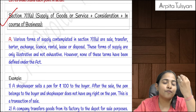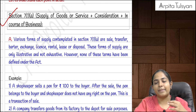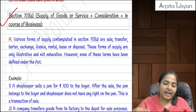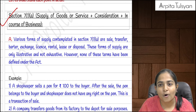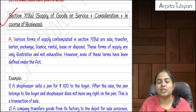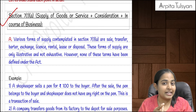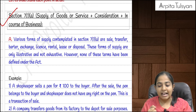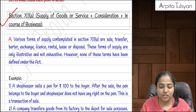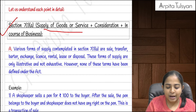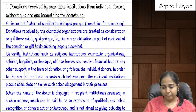Any type of transaction — whether of goods or services — if done for a consideration and in the course or furtherance of business, will be considered a supply. Three parameters must be fulfilled: first, there should be supply of goods or service; second, it should be done for a consideration; third, it should be done in the course of business. If all three are fulfilled, that transaction is a supply as per section 7(1)(a).